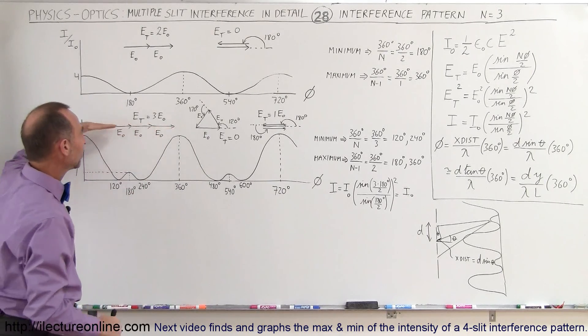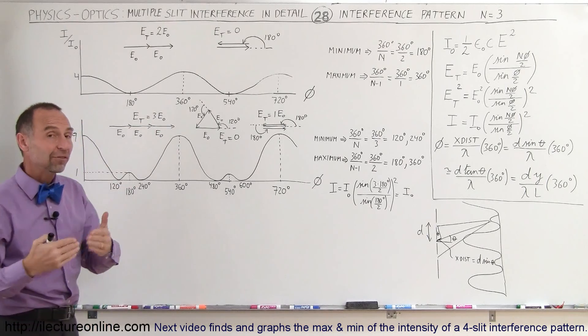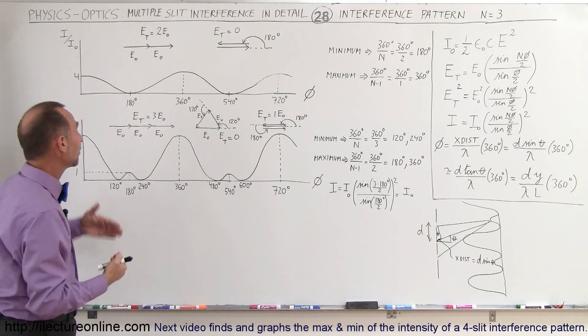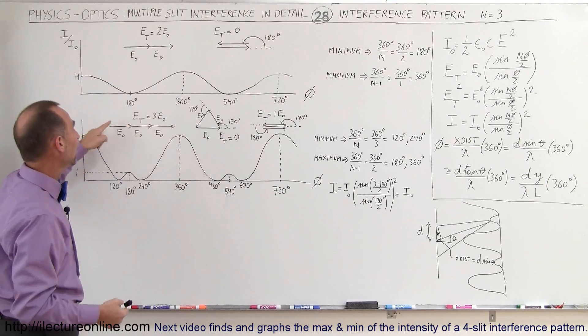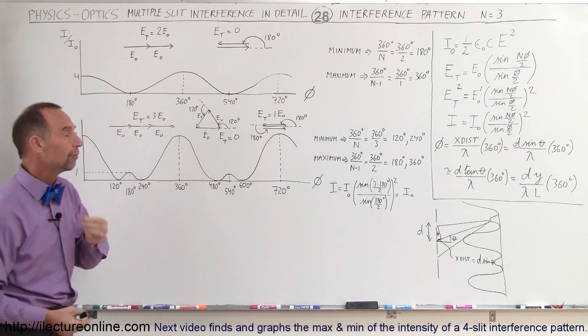When they're all lined up, of course, in the same phase, or when the phase difference is a full phase, a full wavelength, then, of course, add up to three times the maximum value for each individual phasor.